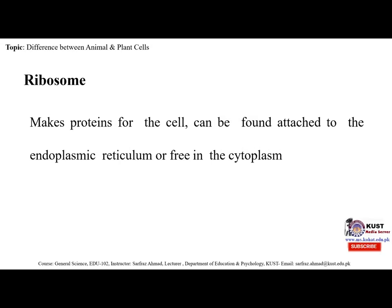Ribosomes make proteins for the cell and can be found attached to the endoplasmic reticulum or free in the cytoplasm. They are the smallest membrane-bound organelles, comprising RNA and protein, and are the sites for protein synthesis — hence referred to as the protein factories of the cell. Ribosomes are minute particles of RNA and associated proteins that function to synthesize proteins needed for many cellular functions such as repairing damage or directing chemicals.